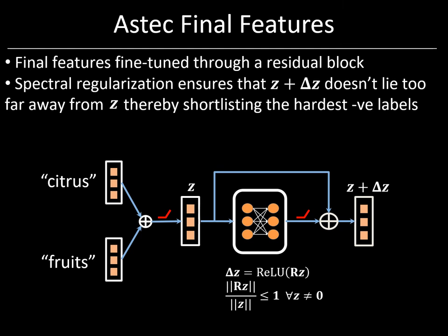The objective in the third module is to reap all the accuracy gains by fine-tuning the features for the task at hand while still paying just logarithmic costs, by fine-tuning the features only on the shortlisted labels. This can be achieved by ensuring that the hardest negative labels to classify in the final feature space Z+ΔZ continue to lie within the labels shortlisted in Module 2. In Aztec, we fine-tune using a residual block whose spectral norm has been constrained to be no greater than unity. The residual connection has just an extra d² parameters, which implies that the final features Z+ΔZ can be learnt accurately even from the limited training data available in short-text applications. Furthermore, the final features can be computed in milliseconds on a CPU for low-latency applications.